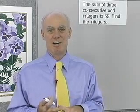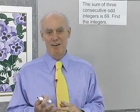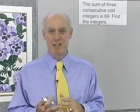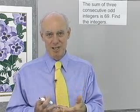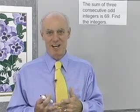3, 5, and 7, or let's say 11, 13, and 15. They're in consecutive order, but they're all odd. So the first one's odd. The next is going to be the next odd number after that and the next odd number after that.